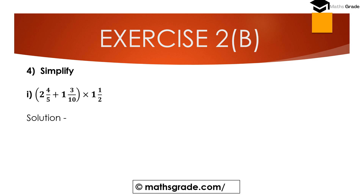Question number 4 — Simplify. The first bit is: 2 and 4/5 plus 1 and 3/10, inside the parenthesis bracket, multiplied by 1 and 1/2. All these fractions are mixed fractions, so convert the mixed fractions into improper fractions.